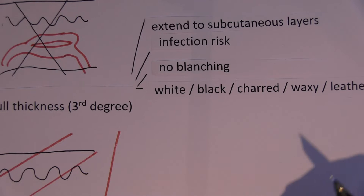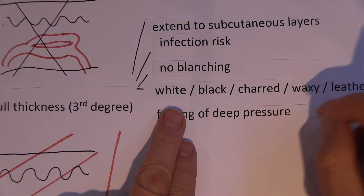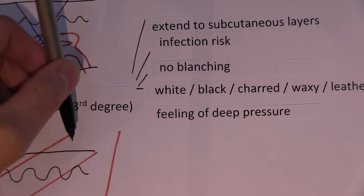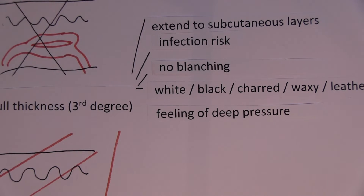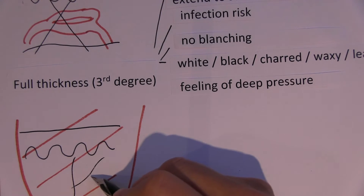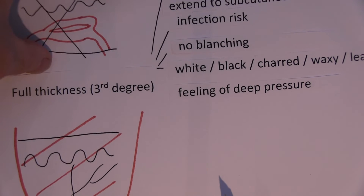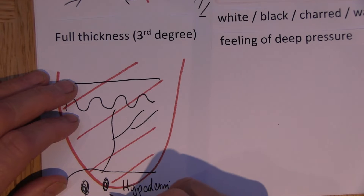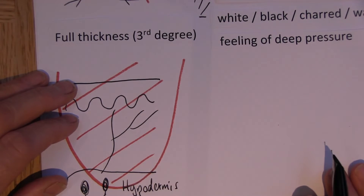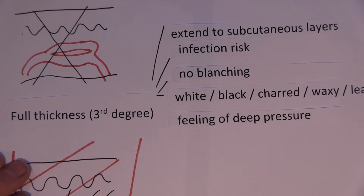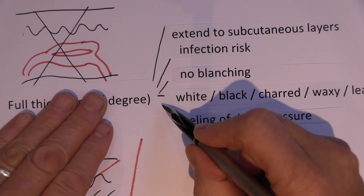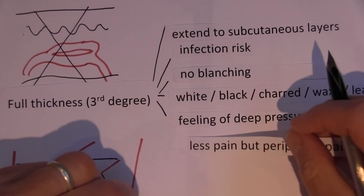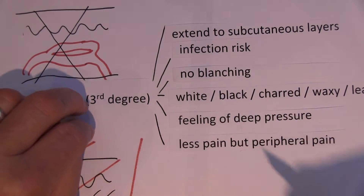The nociceptors are all in the dermis and they're all lost. So when you prick the area with a sharp pin, there are no nociceptors to feel the sharp pain — they've all been burnt away. However, some pressure receptors sit very low, even in the hypodermis, so pricking with a needle may give a feeling of deep pressure from preserved pressure receptors. Because the nociceptors are gone, there is less pain.